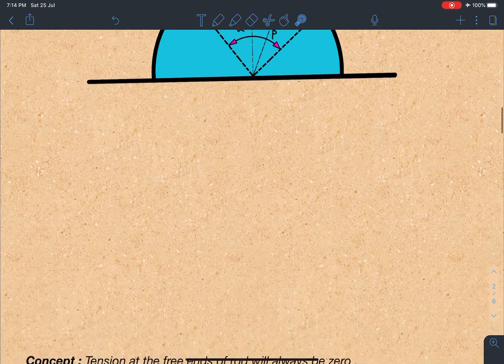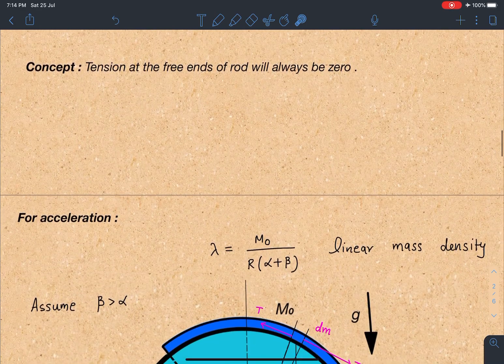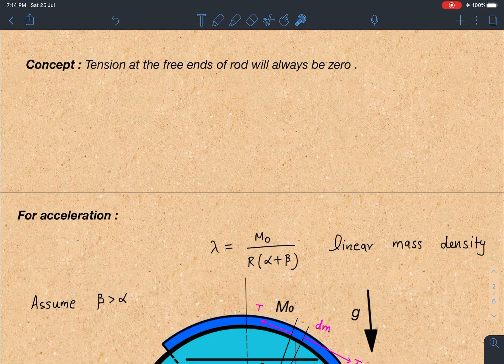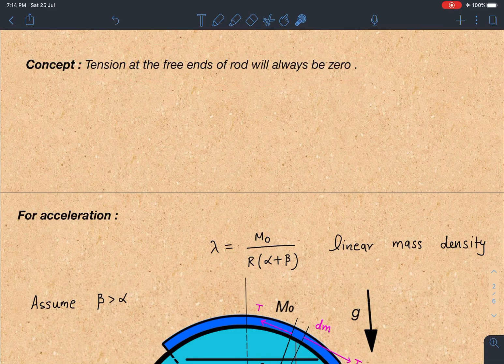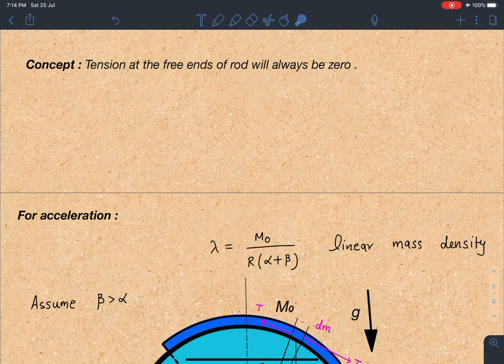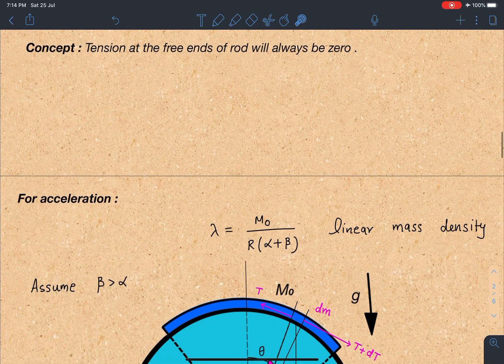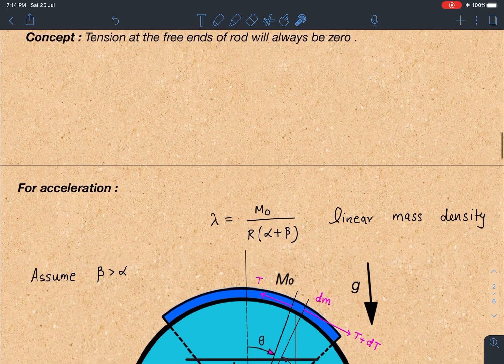So first part we are going to discuss is the acceleration. Here one thing which you have to remember is that the tension at the free end of the rod will always be zero. That is the concept which we are going to use and logically also it is correct as there will not be any mass present at the end of the rope or chain. So that's the reason tension is going to be zero.